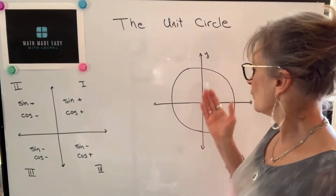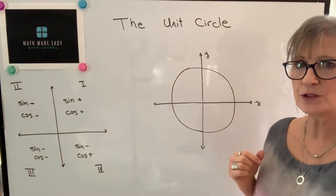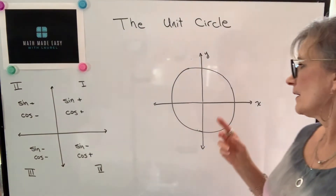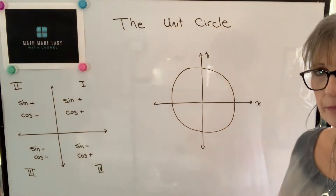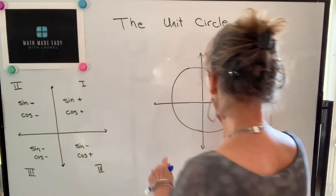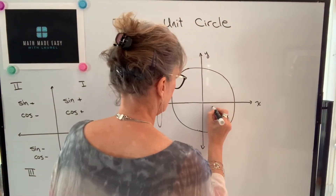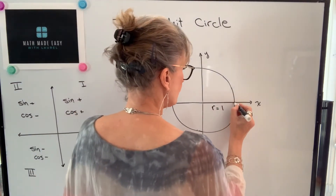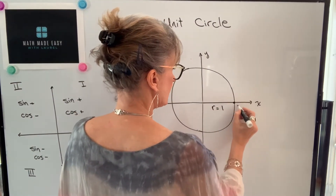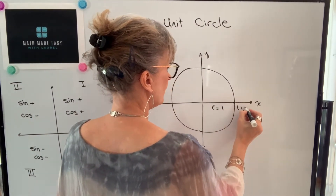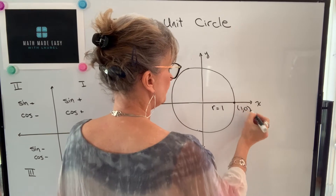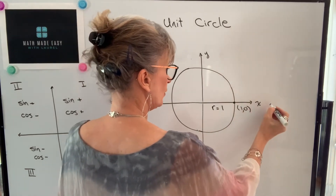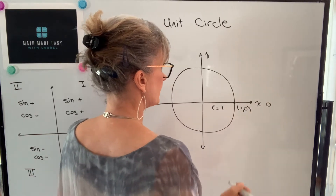We're going to look at a unit circle, so I'm going to center that circle at the origin. By unit circle I mean it has a radius of one. So if my radius is one, my x value is one here and my y value is zero. I'm going to work in radians, so this is zero radians.